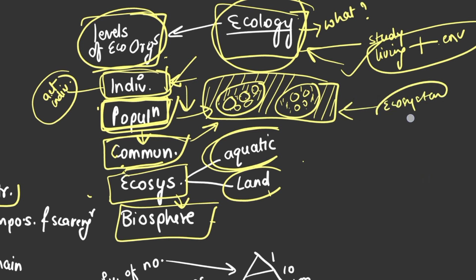These are all the processes under the ecosystem. Now the ecosystem has two types. One is the aquatic ecosystem and the other is the land ecosystem. Communities in the water form the aquatic ecosystem.